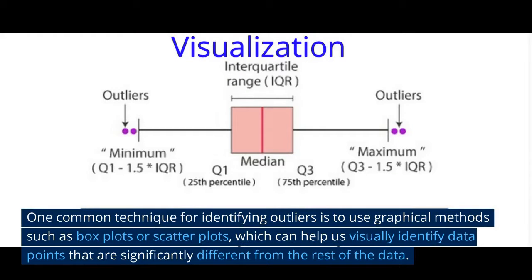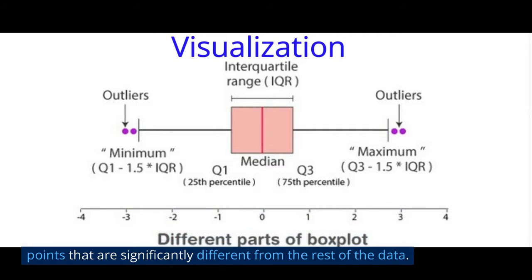One common technique for identifying outliers is to use box plots, which show the distribution of data by plotting the minimum, first quartile, median, third quartile, and maximum value. Outliers are typically identified as data points that fall outside the upper and lower bounds of the box plot, defined as 1.5 times the interquartile range above the third quartile and below the first quartile respectively.